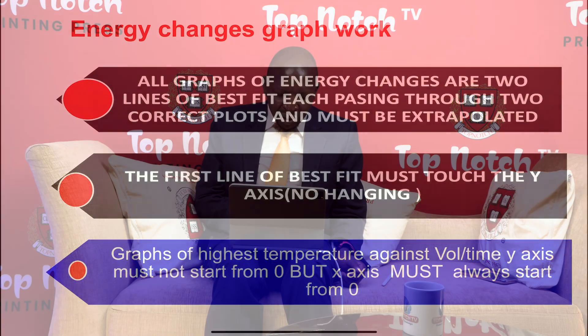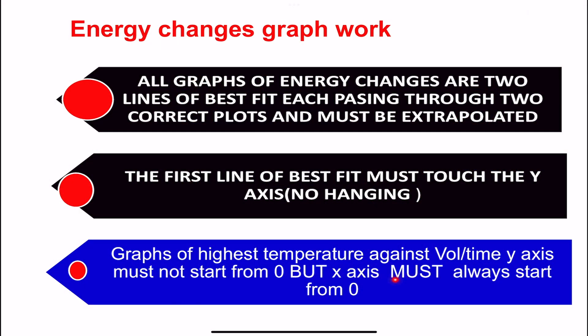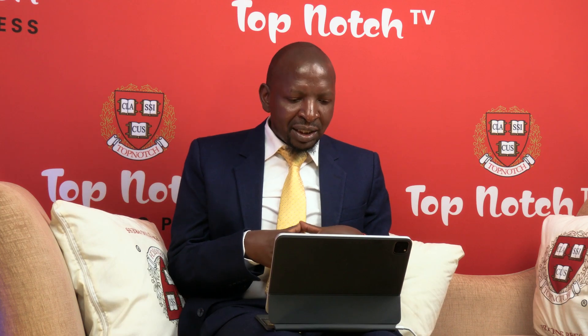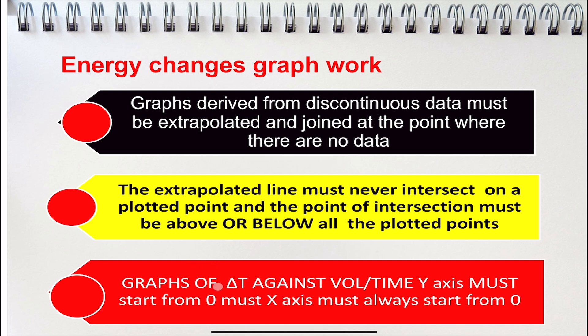Today we are going to look at another type of graph where your graph starts from zero-zero. Another important point we looked at: a graph derived from discontinuous data — when the temperature is not continuous — must be extrapolated and joined at the point where there is no data. The extrapolated lines must never intersect on a plotted point; they must intersect either below or above all the plotted points. The graph we are dealing with today has the y-axis starting from zero and the x-axis also starting from zero.